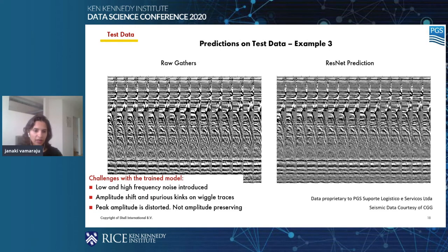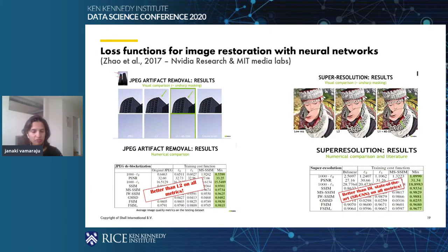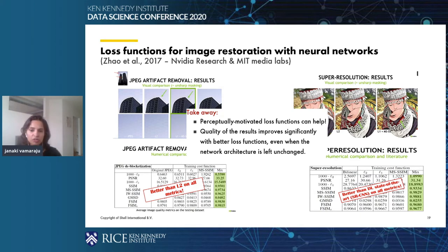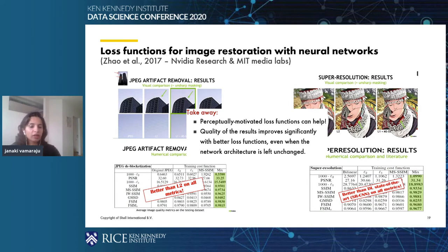To address this, there is a notable work from 2017 on loss functions for image restoration with neural networks from NVIDIA Research and MIT Labs. They focus on artifact removal and super-resolution, and say that using mixed loss functions is better than using conventional L2 norm or SSIM loss. L2 is convex and differentiable and penalizes large errors but is more tolerant to smaller errors regardless of underlying image structure. Structural similarity index takes into account local structures in an image; however, it produces edge artifacts or DC shift, and is not particularly sensitive to uniform biases, causing amplitude shifts. The takeaway was that perceptually motivated loss functions can help, and quality can improve significantly with a better loss function even when the network architecture is left unchanged.